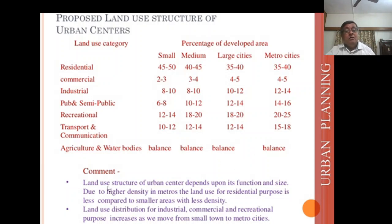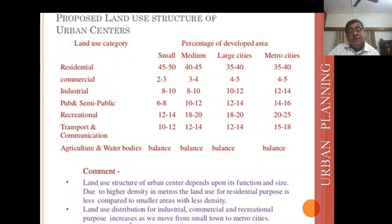Comment or conclusion: land use structure of an urban center depends upon its functions and size. Due to higher density in metros, the land use for residential purpose is less compared to small areas with less density. Land use distribution for industrial, commercial, and recreational purposes increases as we move from small towns to metro cities. Thank you very much.